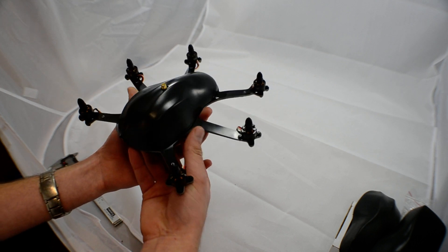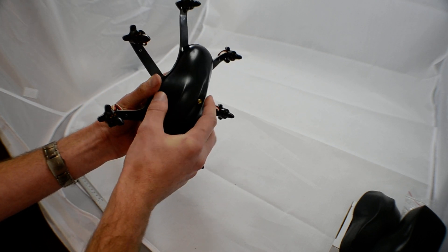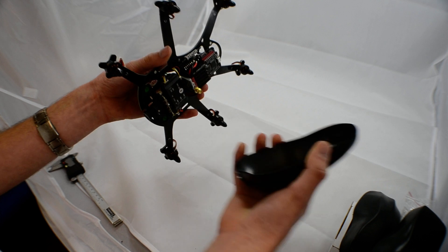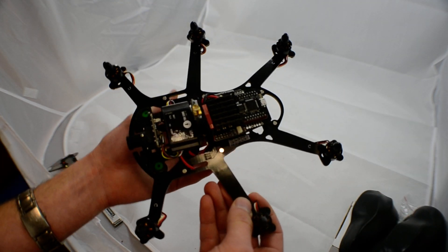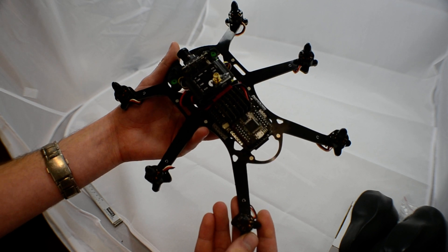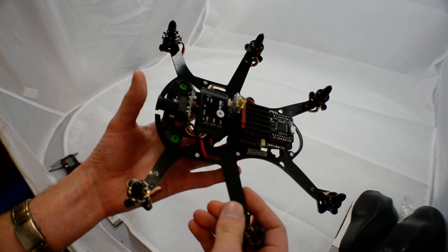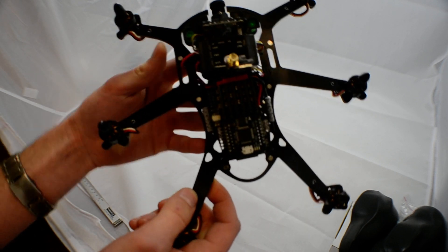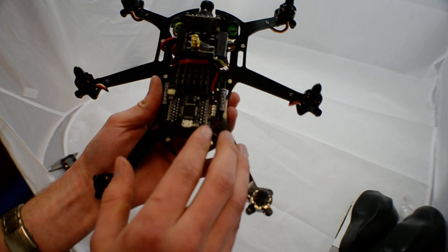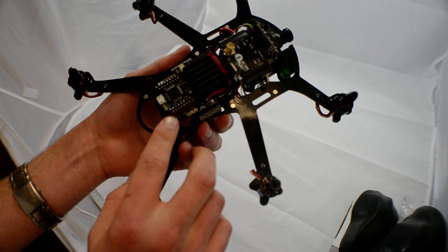So I'm going to pull the canopy off and give you a look inside. As you can see, it's all nicely laid out inside. We've got the TBS camera up front, the TBS core, the six ESCs and the TBS flight controller on the back.